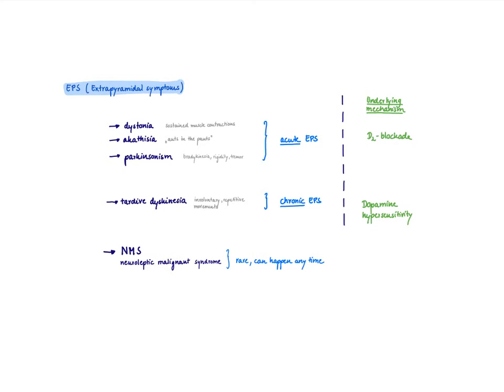Dystonia. Tonia is muscle tone. Dys is abnormal muscle tone. So what you normally see is a sustained muscle contraction, mainly in the neck area, so a stiff neck. Then we see akathisia, which is kind of this urge to move. You cannot sit still. You cannot lie still. So it's a very bothersome side effect, often referred as the ants in the pants.